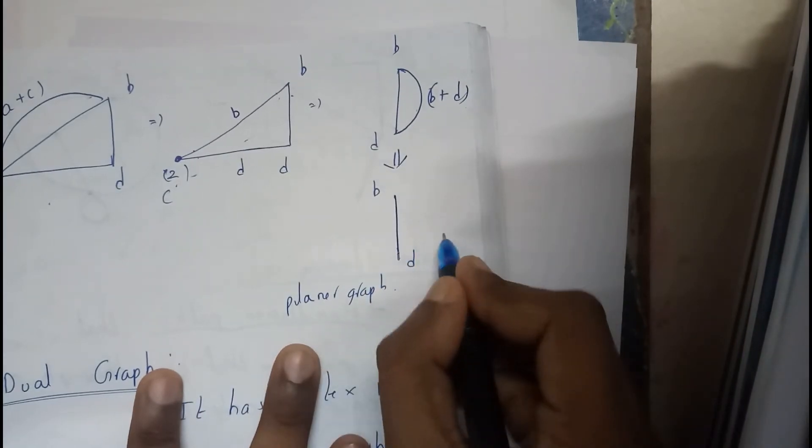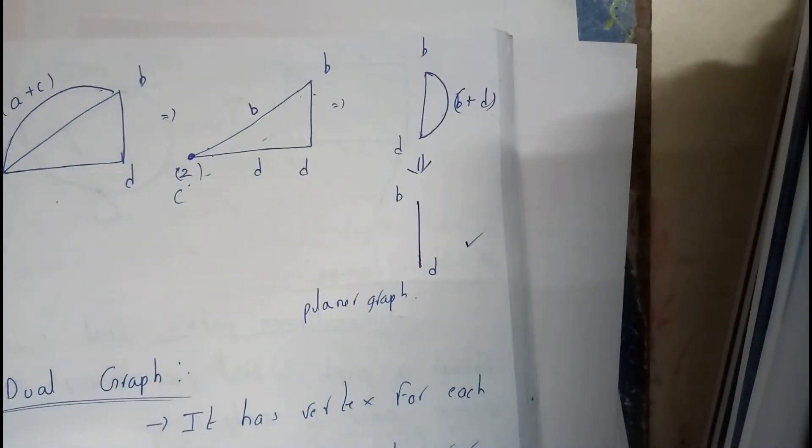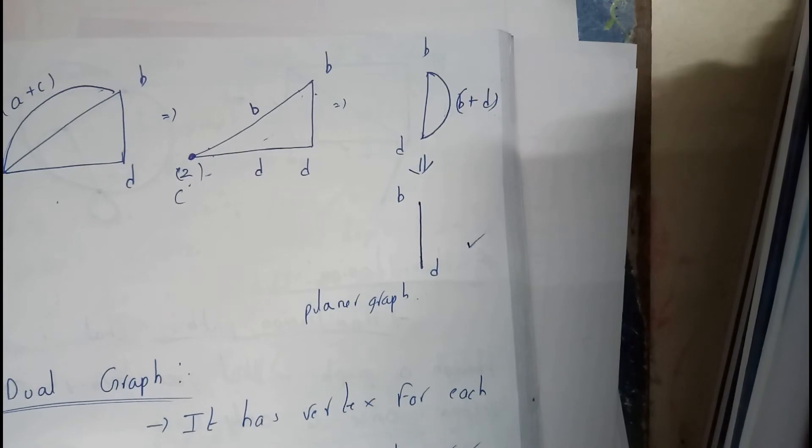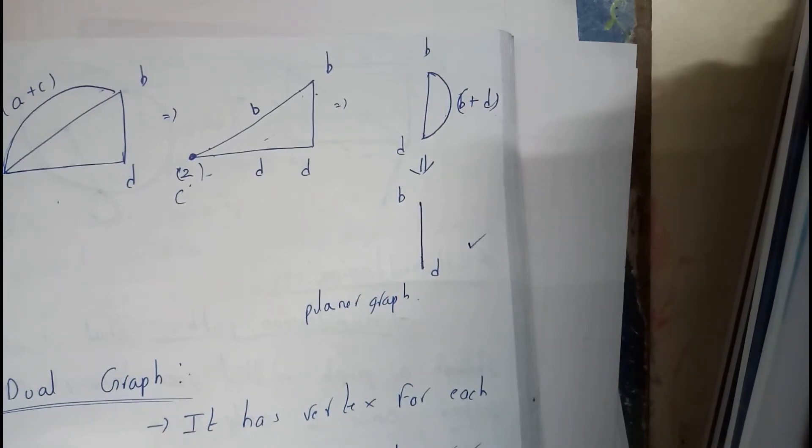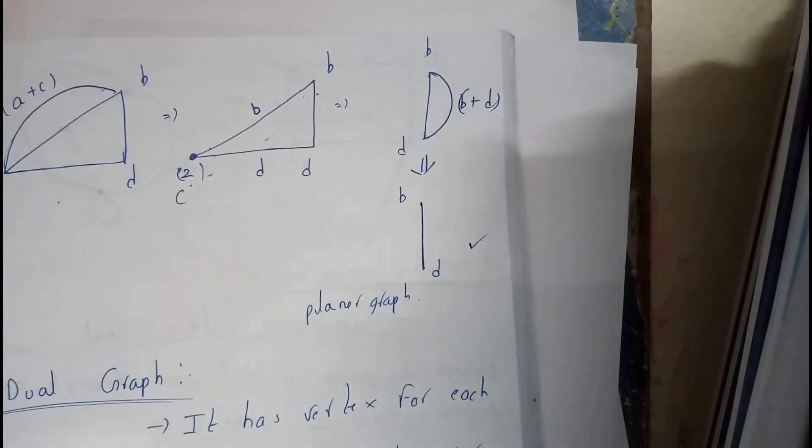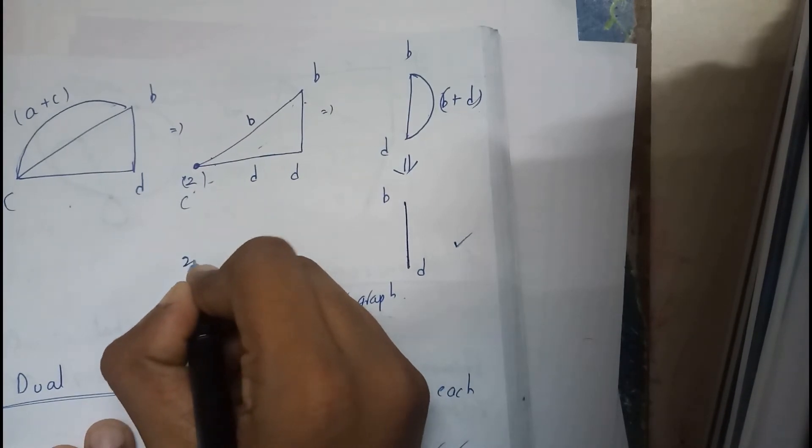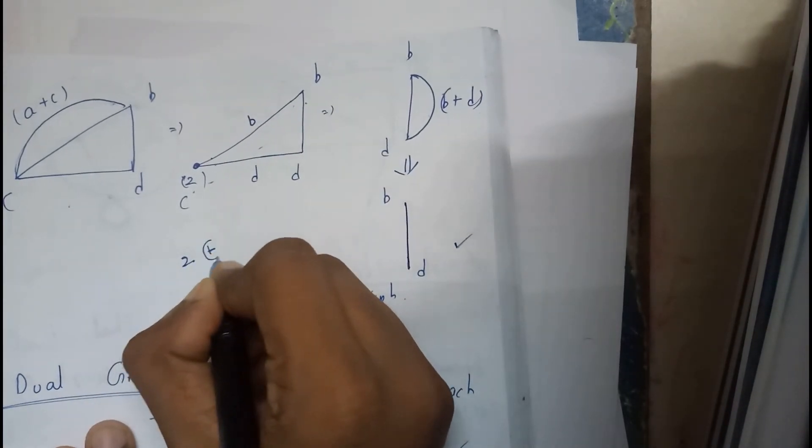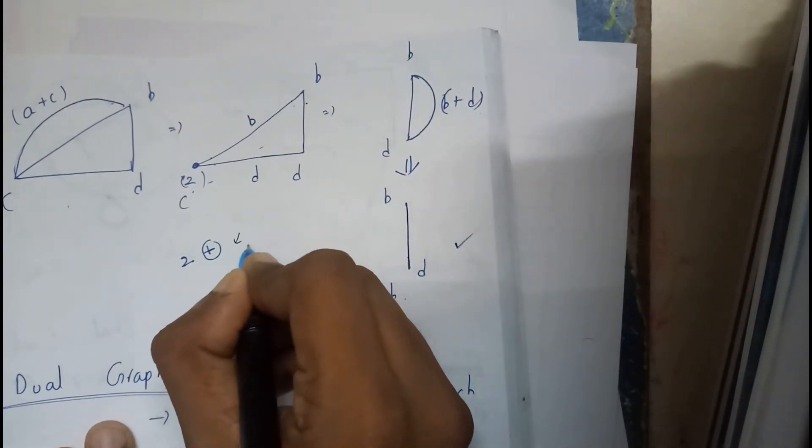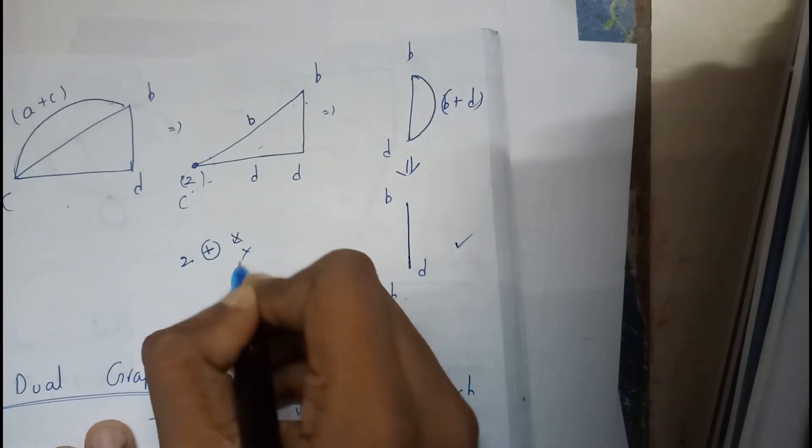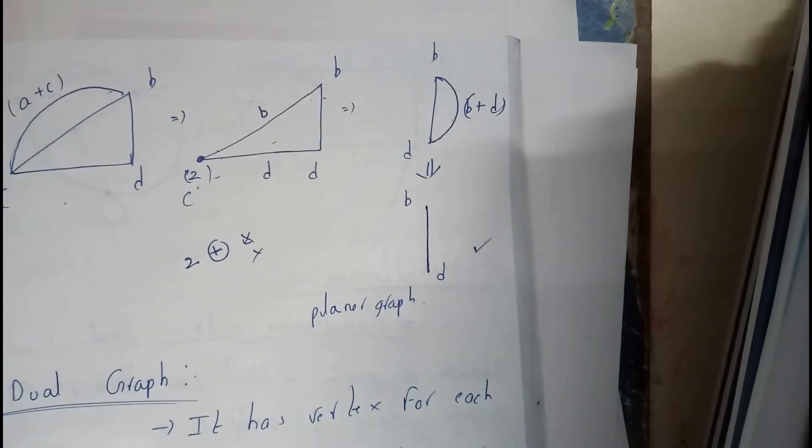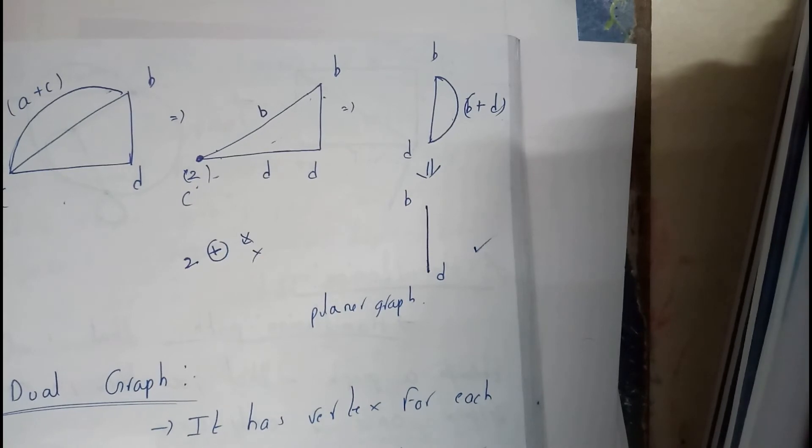I hope you understood how it is solved step by step, such that wherever you will be finding degree 2, you'll be combining them and removing the parallel edges and removing the self loops, and you'll be continuing it until you reach a single edge or a four-vertex complete graph.